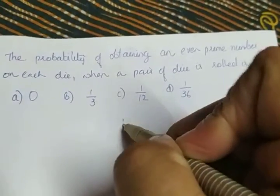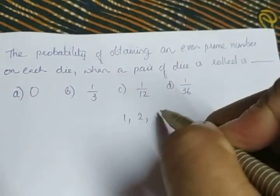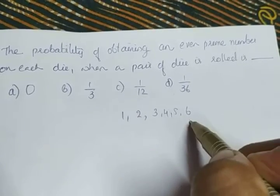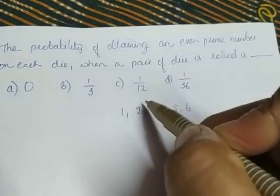A die contains the faces 1, 2, 3, 4, 5, and 6. So the numbers from 1 to 6. Out of these numbers, which is the only even prime number? 2.